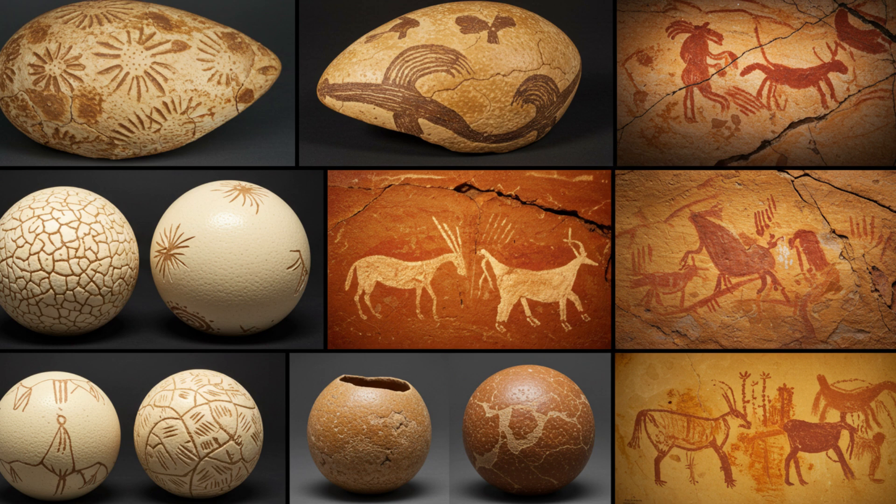Around a hundred thousand years ago, we see this sudden explosion of symbolic artifacts. Really? Engravings on ostrich shells, intricate cave paintings, the use of ochre to create pigments, all signs of abstract thought and creative expression. Ah, so these symbolic artifacts could be seen as evidence of language being used in a more social context, a way to share stories, beliefs, and maybe even instructions for tool making. Think about it: every word we speak, every letter we write is a symbol representing something else. The ability to create and understand symbols is intimately linked to language.